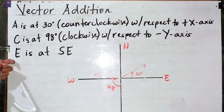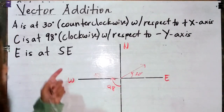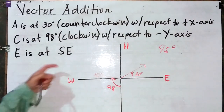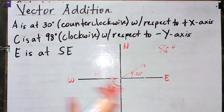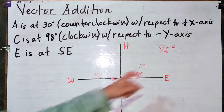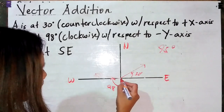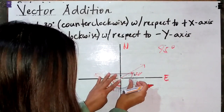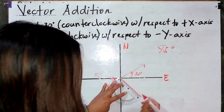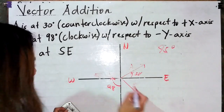Lastly, vector E is at southeast. What do we mean by southeast, northeast, northwest, and so on? This means it has a 45-degree angle. Always remember: when you see a direction in between two cardinal directions — southeast, northwest, southwest, and so on — it has a 45-degree angle. So for southeast, we place the vector at 45 degrees in between. So those are vectors A, C, and E.